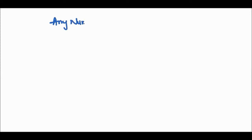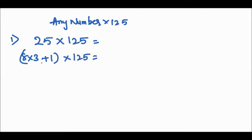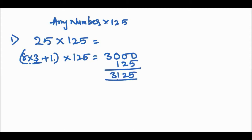Now let's do any number into 125. First example: 26 into 125. We divide 26 by 8: 8 × 3 = 24, remainder 2. So 3 comes here giving 3000, and remainder 2 means 125 × 2 = 250... actually the answer is 3125. Easy trick — you can do it in one second.